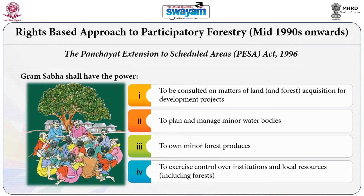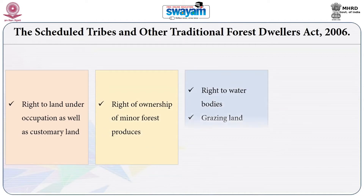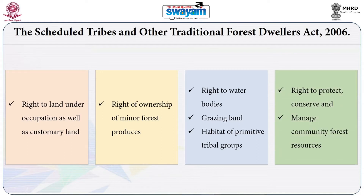The second act crucial to the rights-based regime is the Forest Rights Act (FRA), also known as the Scheduled Tribes and Other Traditional Forest Dwellers Recognition of Forest Rights Act 2006. The FRA entails several kinds of rights: the right to land in occupation, customary land rights, ownership of minor forest products, rights over water bodies, grazing land and habitat of primitive tribal groups, and the right to protect, conserve, and manage community forest.